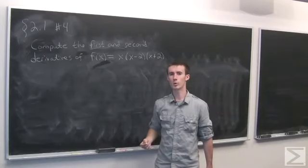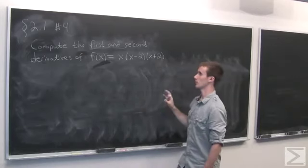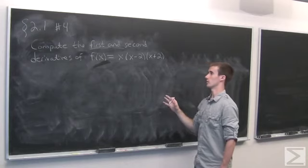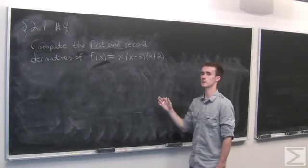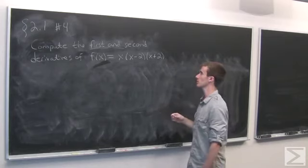Problem number 4 in section 2.1 asks us to compute the first and second derivatives of this function f(x) = x(x-2)(x+2).